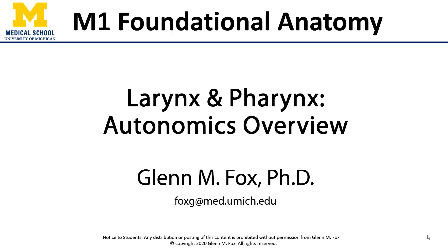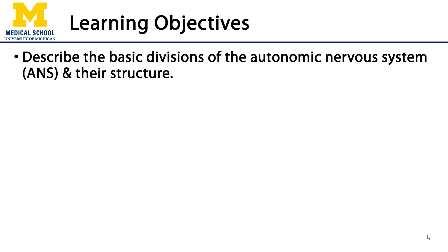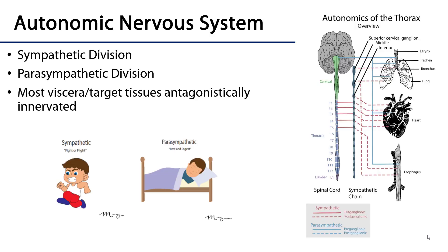Let's talk about autonomics. In this video we'll describe the basic divisions of the autonomic nervous system and how they're structured. The autonomic nervous system is the automatic nervous system. It controls a variety of tissues with unconscious precision — things that we don't think about and don't want to think about, such as rate of respiration, heart rate, the rate at which we metabolize or produce glucose, whether our pupils are dilating or constricting, etc.